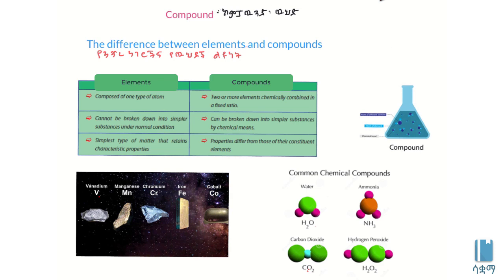The difference between elements and compounds: a compound can be broken down into two or more elements. Elements cannot be broken down into smaller pieces using normal chemical methods under normal conditions.